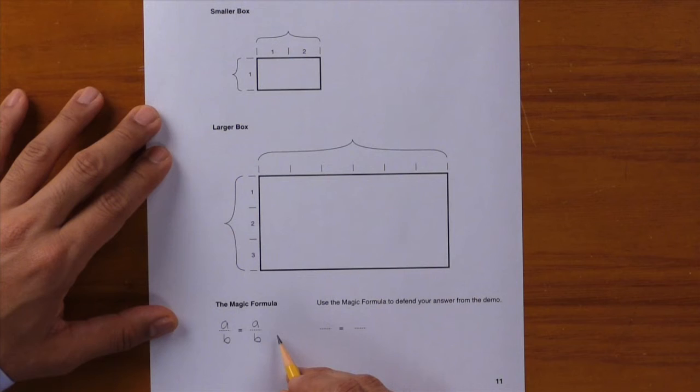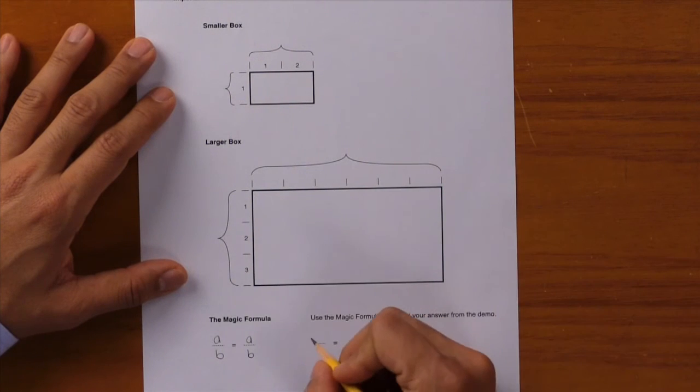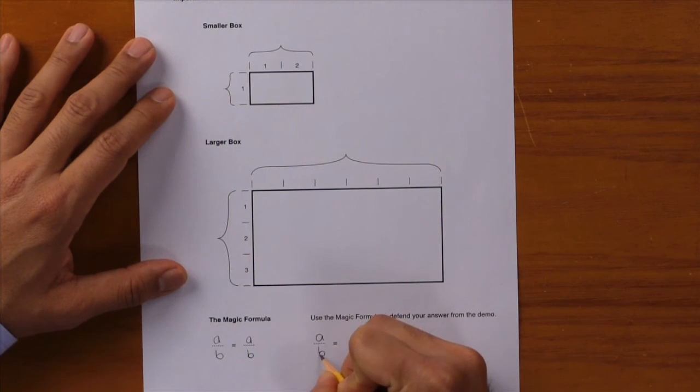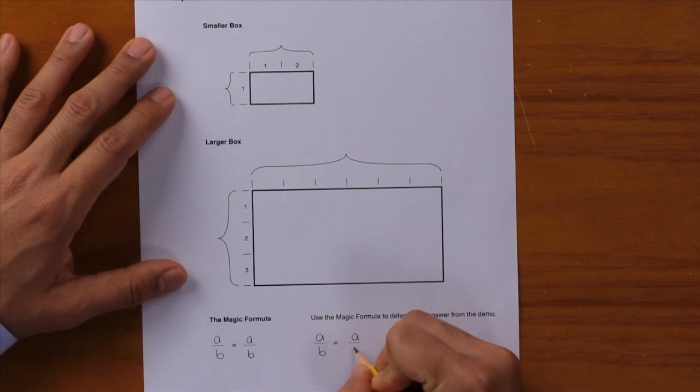Let's use the magic formula to defend our answer from the demo. Here, let's rewrite the magic formula: a over b equals a over b.